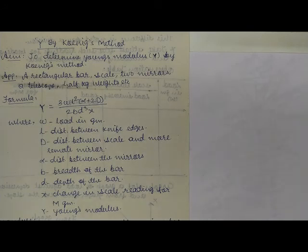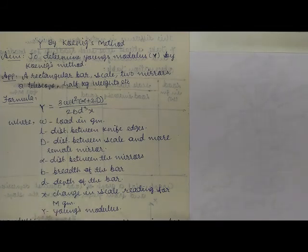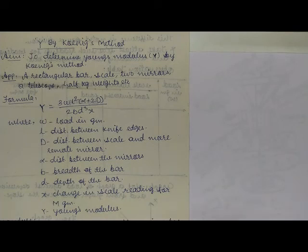The aim of this experiment is to determine the Young's modulus of a given material — specifically a beam of wooden material — using Koenig's method. We require some apparatus as mentioned on the chart; the link to the PDF format of the chart will be given in the description box of this video, from where you can take the detailed chart.